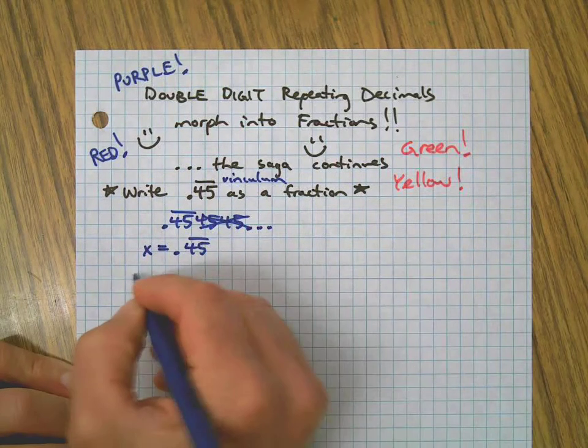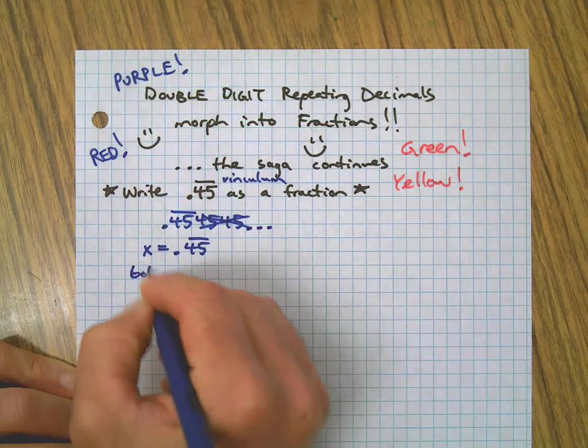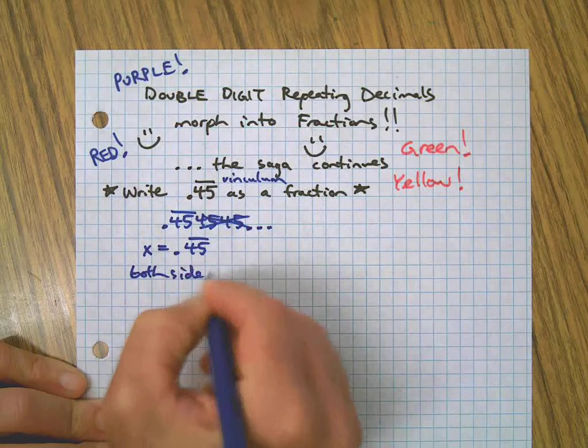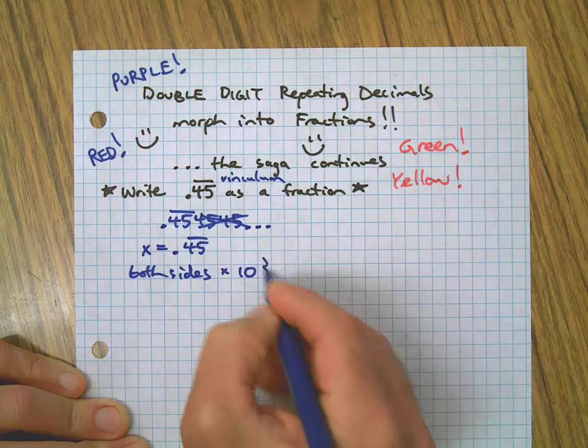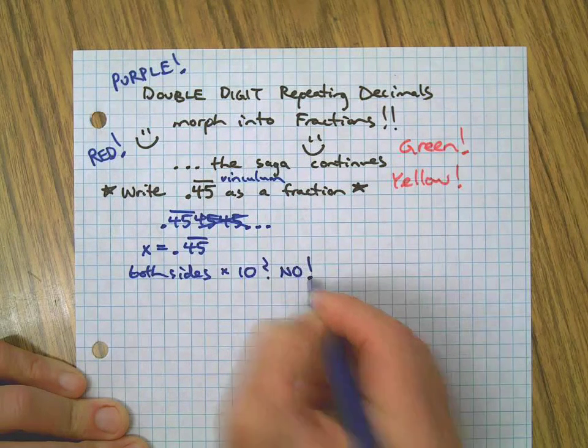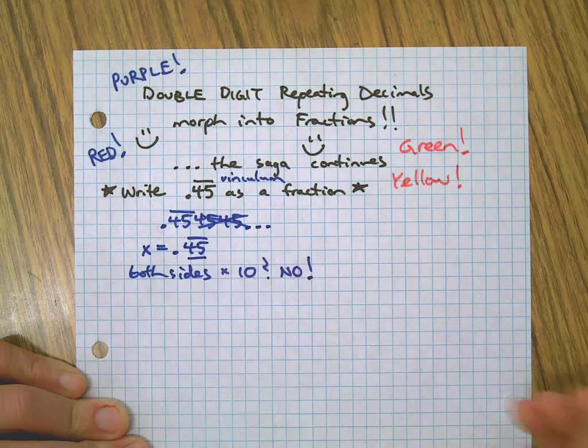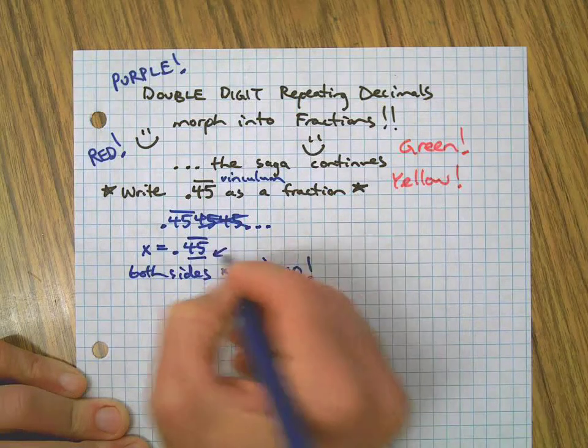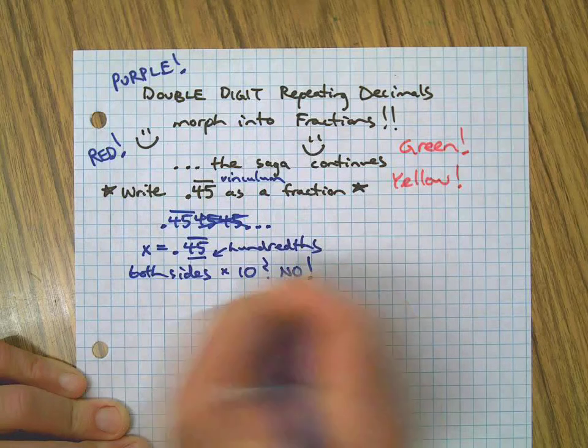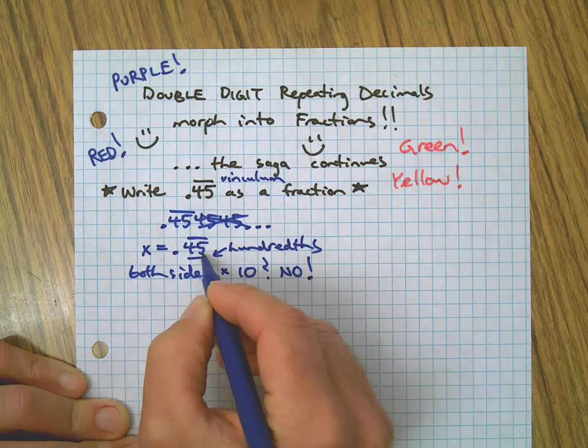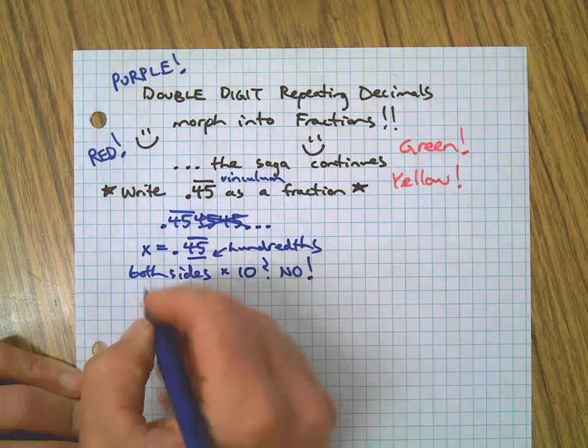Then remember on the first video we did both sides we multiplied by 10. Both sides times 10 - is that going to work here? No. Why? Because we have two decimal places, right? We have hundredths, two decimal places, we have the tenths and the hundredths.